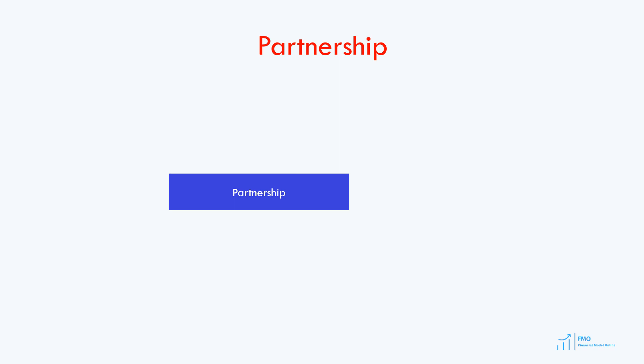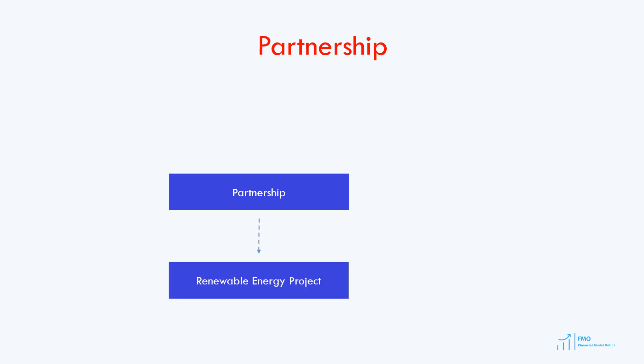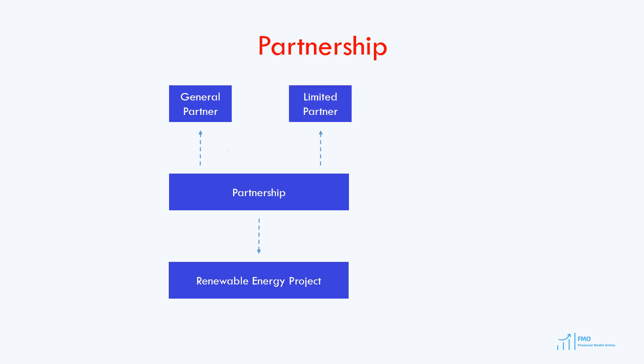Let's now review the case of the partnership, so we understand better how the tax is paid in a partnership. Suppose that a partnership has been set up as an SPV to build and manage a renewable energy project. A partnership should have at least a general partner and a limited partner. Suppose that the general partner owns 60% of the partnership and a limited partner owns 40% of the partnership. Remember that the partnership does not pay income tax — all income passes through to partners, and taxes are paid by the partners.